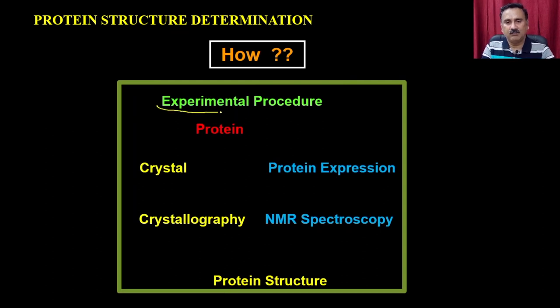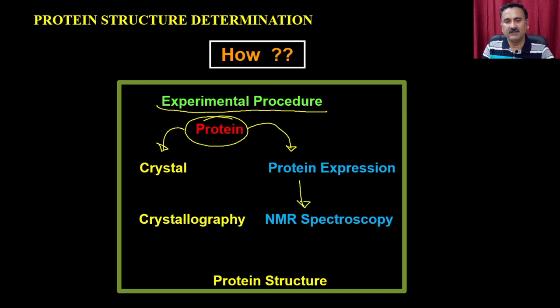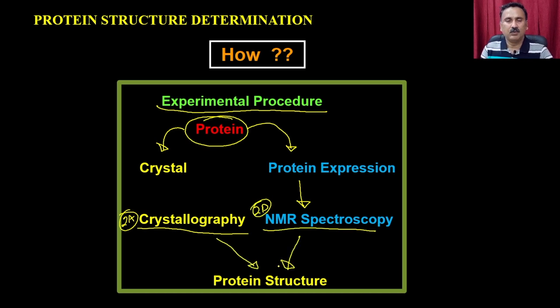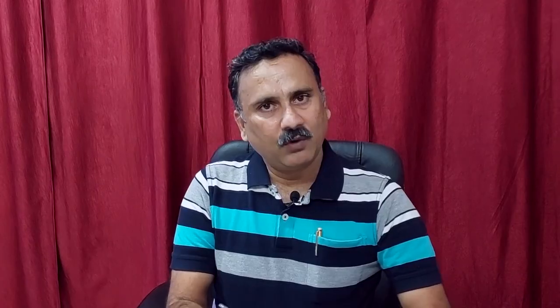As far as the experimental approaches are concerned, once you have the proteins you can generate either a crystal or express the protein for NMR spectroscopy. You have two options: 2A, X-ray crystallography, or 2B, NMR spectroscopy, and both are going to give you protein structures. Before we discuss any of these methods, I want to make clear that we are not going to extensively deal with either method. The purpose of today's lecture is to very briefly tell you about X-ray crystallography and NMR spectroscopy so that you will be able to follow the content and understand the potential of these techniques.